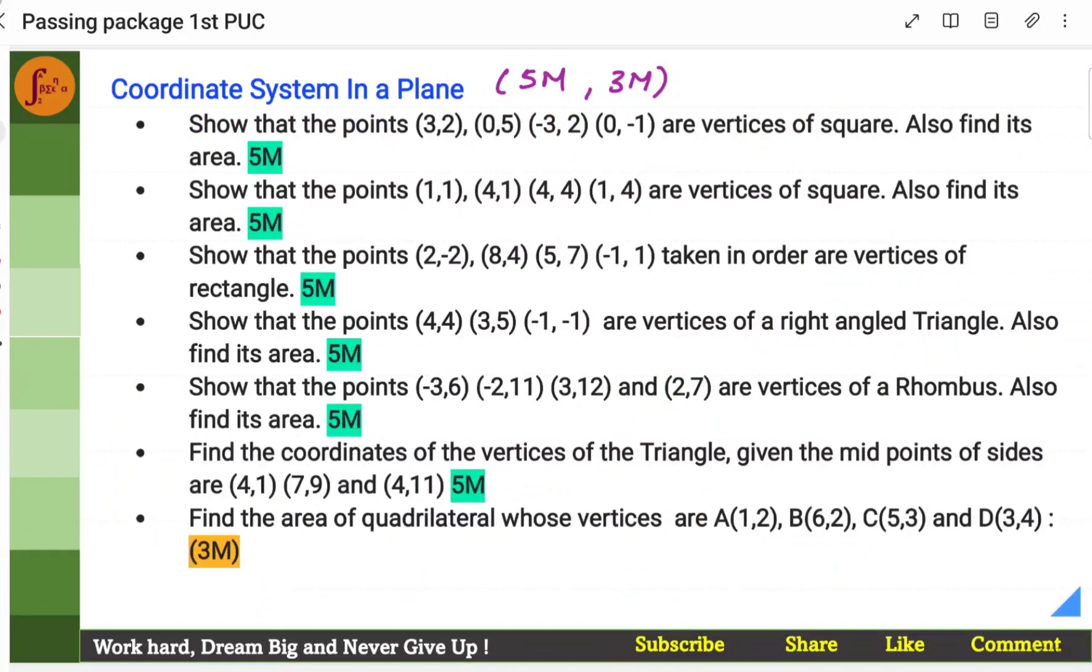Next one is coordinate system in a plane. Here, you have 5 marker and 3 marker. Here, you have different kinds of problems, but the concept is same. The steps are same. Some points would be given. You'll have to prove they are vertices of a square or vertices of a rectangle, vertices of a right angle, vertices of rhombus, vertices of triangle, vertices of quadrilateral. If it is a square, you will have to ensure that all the sides and the diagonals are equal. If it is rectangle, you have to ensure that opposite sides are equal. With good practice, this should be an easy scorer. In addition to verifying that these are the vertices, we may also need to find the area. Area of quadrilateral or area of square, area of triangle. So, we'll have to remember those specific formulas.